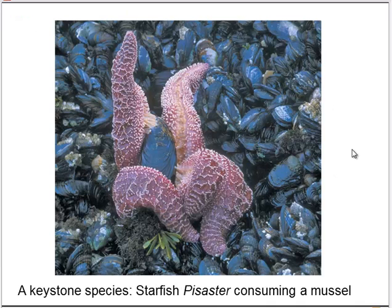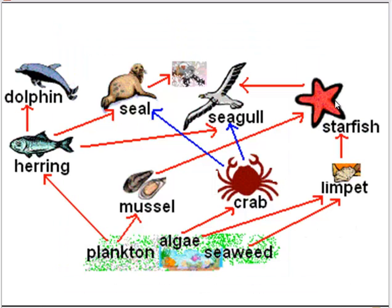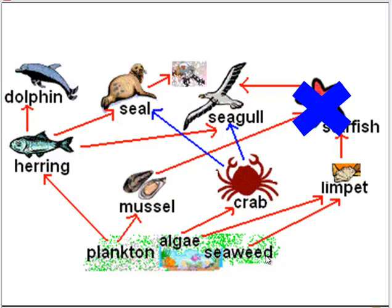This starfish is an example of a keystone species. It's a carnivore that consumes mussels. In the food web for this ecosystem, the starfish is the only predator that consumes mussels and limpets. If we remove the starfish, the limpet and mussel populations are going to boom, depleting the producers in the ecosystem. These mussels and limpets will eat up all the plankton, algae, and seaweed — also probably outcompeting the crabs — and that could lead to the whole ecosystem collapsing.